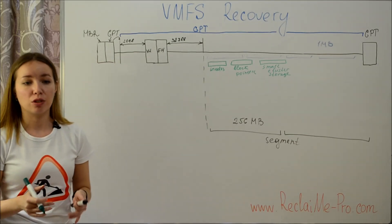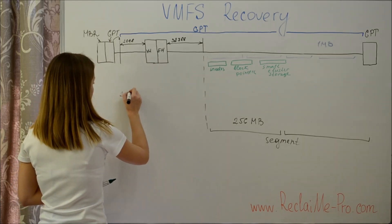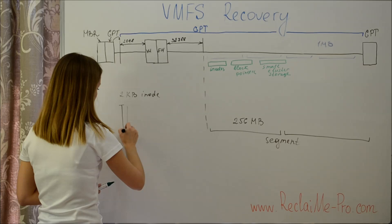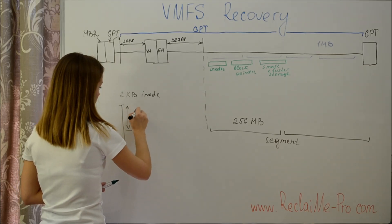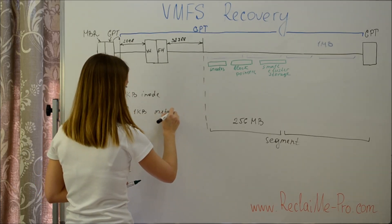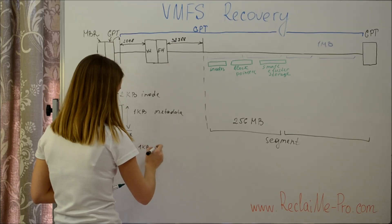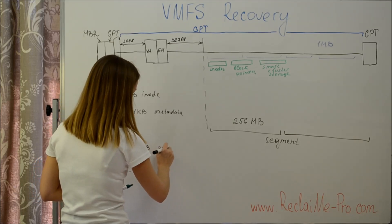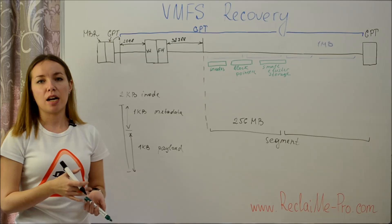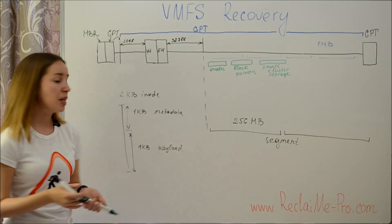Now let's look more closely at inodes. An inode has a fixed size of 2 KB. 1 KB is used to store the set of standard metadata, and one more KB is used for payload. Standard metadata includes the date and time of file creation, the file size, and the file type. The most part of the first 1 KB is unused.